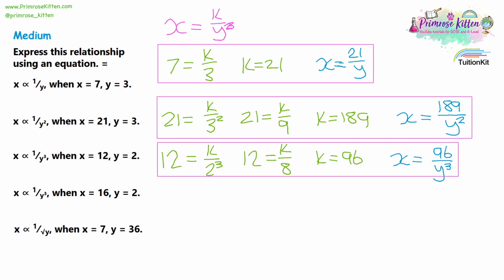Question 4 works the same way. Substituting x equals 16 and y equals 2, with k on top and y cubed below: 2 cubed is 8, so 16 equals k over 8. Doing 16 times 8, k equals 128, leading to our equation x equals 128 over y cubed.